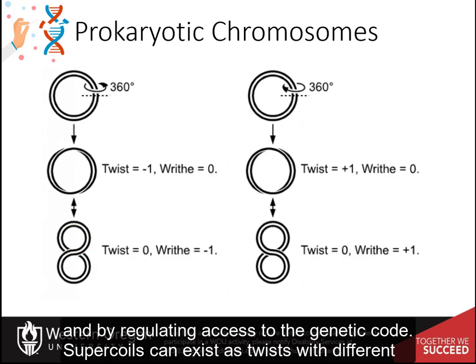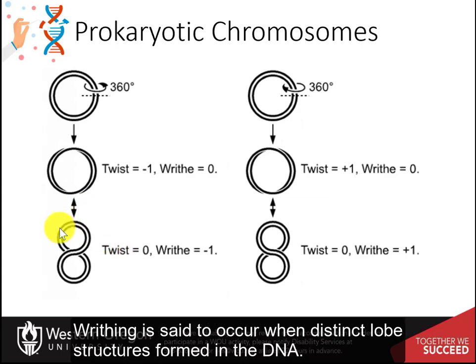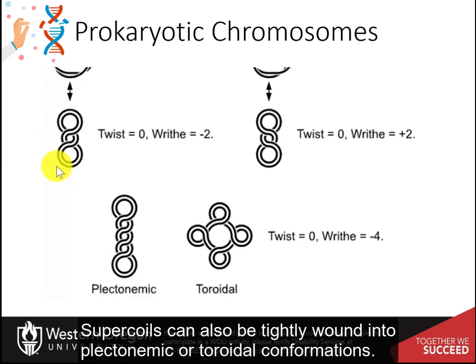Supercoils can exist as twists with different amounts of writhing that occur in the right-handed or left-handed orientation. Writhing is said to occur when distinct lobed structures form in the DNA. Supercoils can also be tightly wound into plectonemic or toroidal conformations.